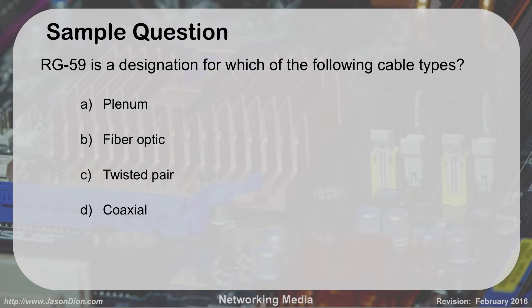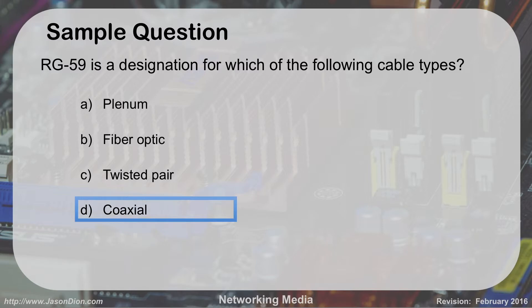Here's a handy memory trick: if you see 'RG' in an A+ question, we're talking coaxial — RG6, RG58, and RG59 are all coaxial cable. If you see 'RJ,' that's twisted pair — RJ11 for phones, RJ45 for Ethernet. Keep that in mind.